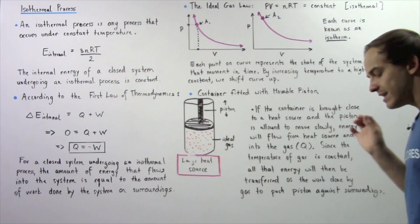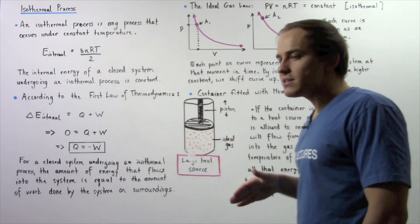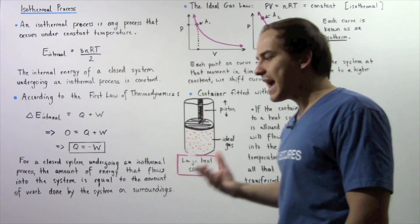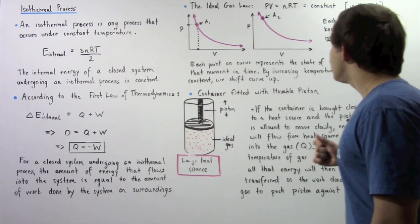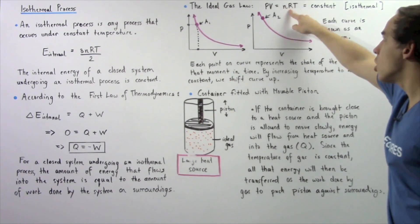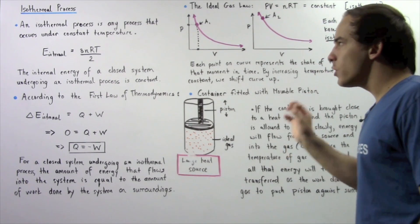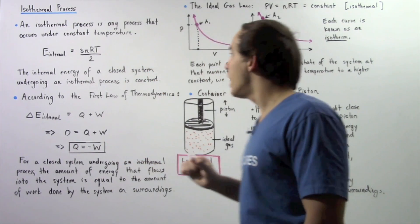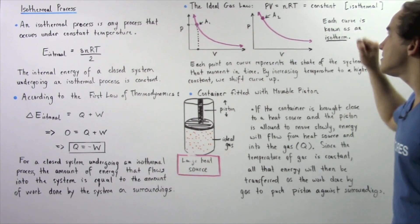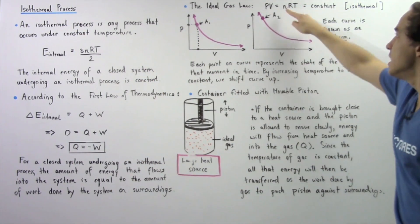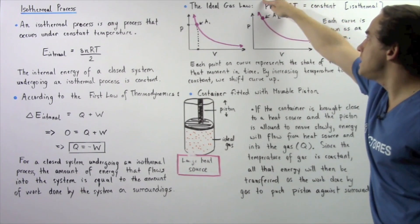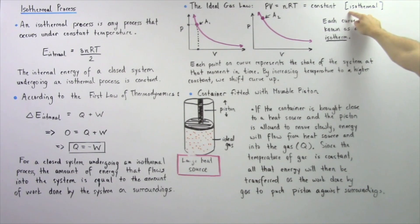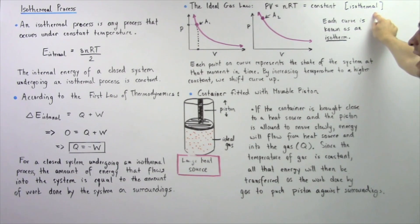Let's recall the ideal gas law, which states that the pressure times the volume of our closed gaseous system equals the product of n, R, and T. If we're dealing with a closed system undergoing an isothermal process, n is constant and T is constant, so the product of P times V also remains constant as long as we're dealing with an isothermal process.